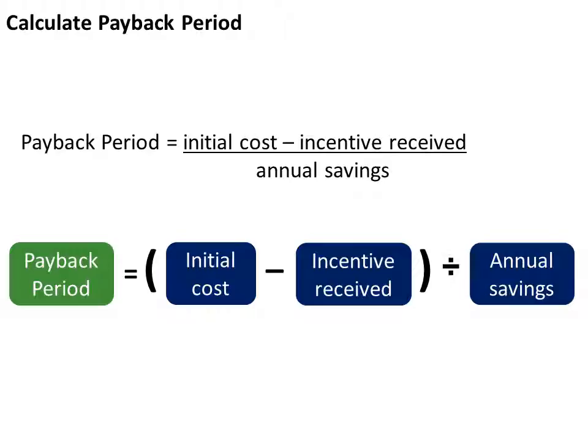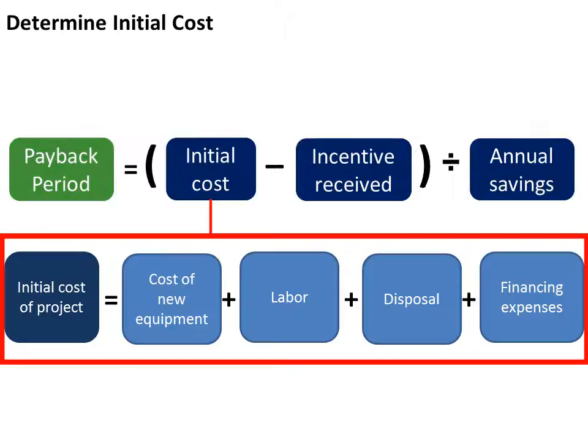Next we'll go over how to determine initial cost, amount of incentive received, and annual savings. The initial cost of your energy efficiency project includes the cost of the new energy efficient equipment you're installing, the labor to install it, and the cost to remove and dispose of any old equipment. The initial cost also includes the cost of financing the project, including interest and finance fees.